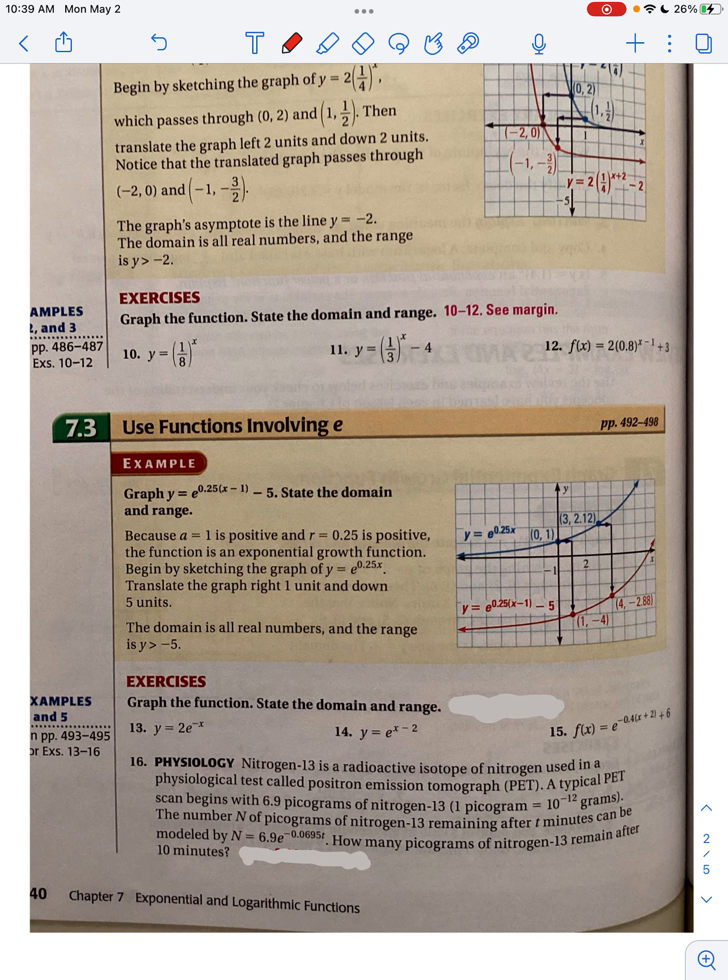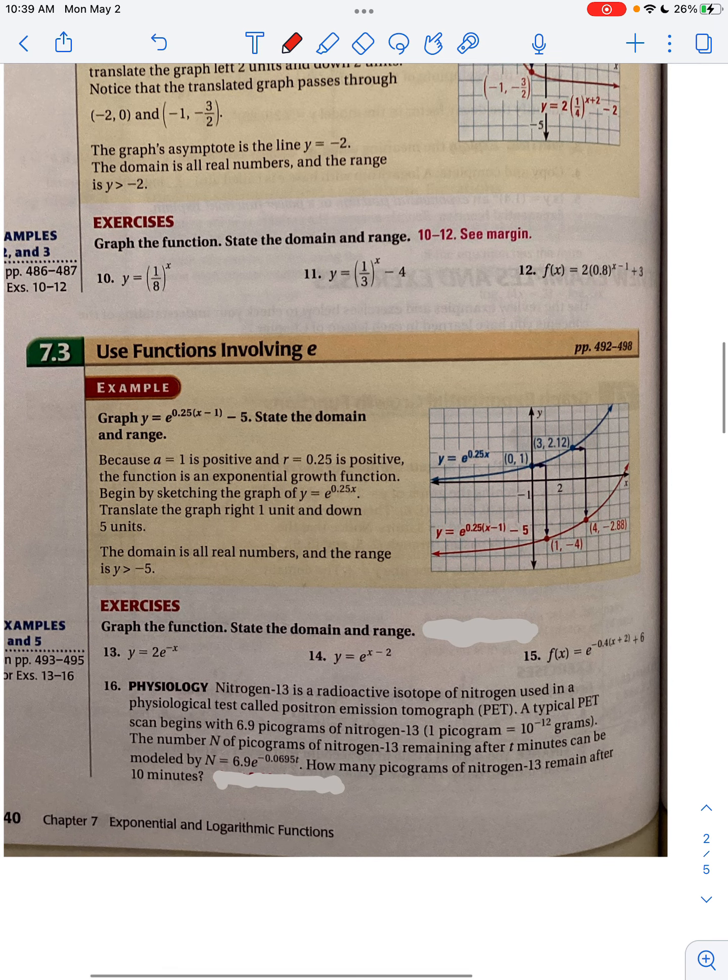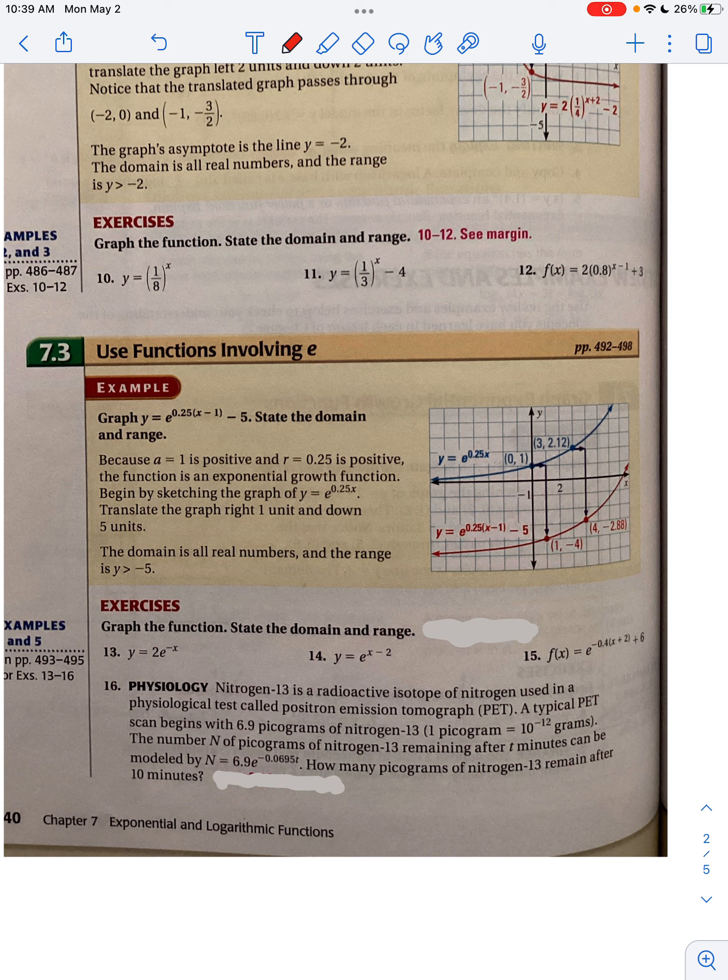Then we talked about the functions involving e. E is an irrational number. It never ends. We can graph it and it kind of works the same way as exponential functions, as far as translating it left, translating it right, moving it up, moving it down. Same rules apply when you're graphing. Label the points, label your asymptotes, make sure your x and y axes have numbers, and then the domain and the range.